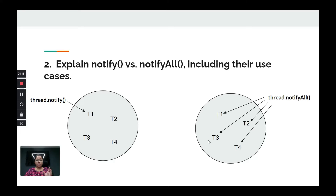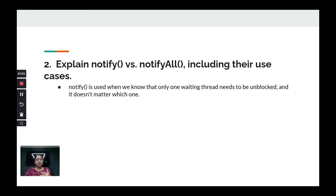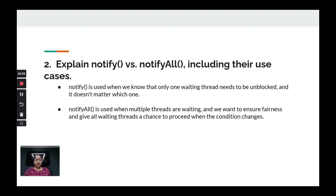The first question: how can you explain notify and notifyAll using use cases? The biggest difference is that thread.notify only notifies one thread — we don't know which thread. thread.notifyAll notifies all waiting threads. notify is used when we know only one thread needs to be unblocked. notifyAll is used when multiple threads are waiting and you want to give all of them a chance to proceed when the condition changes.